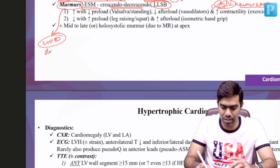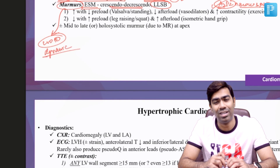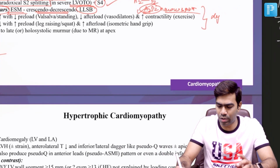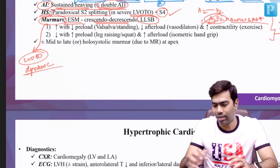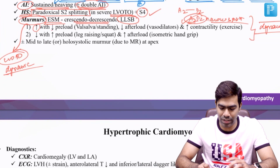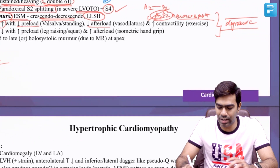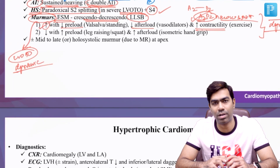The murmur is due to LVOT obstruction. Since LVOT obstruction is dynamic — load dependent and contractility dependent — the murmur is equally dynamic. The HOCM murmur is one of the most dynamic murmurs in cardiology, which is why it is a very important exam topic. The obstruction and gradient increase with reducing preload, reducing afterload, and increasing cardiac contractility, and the same conditions will increase the murmur.